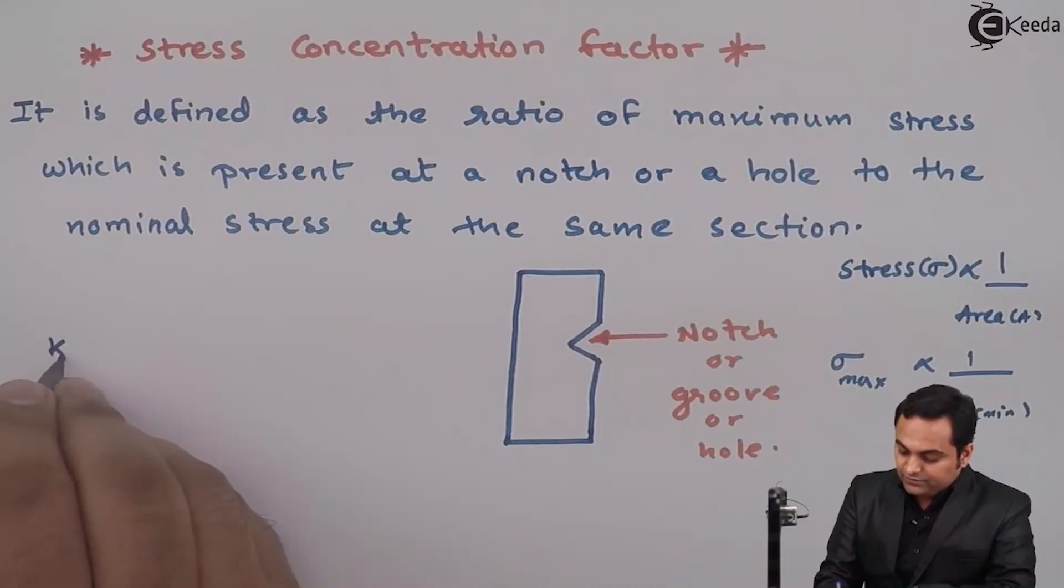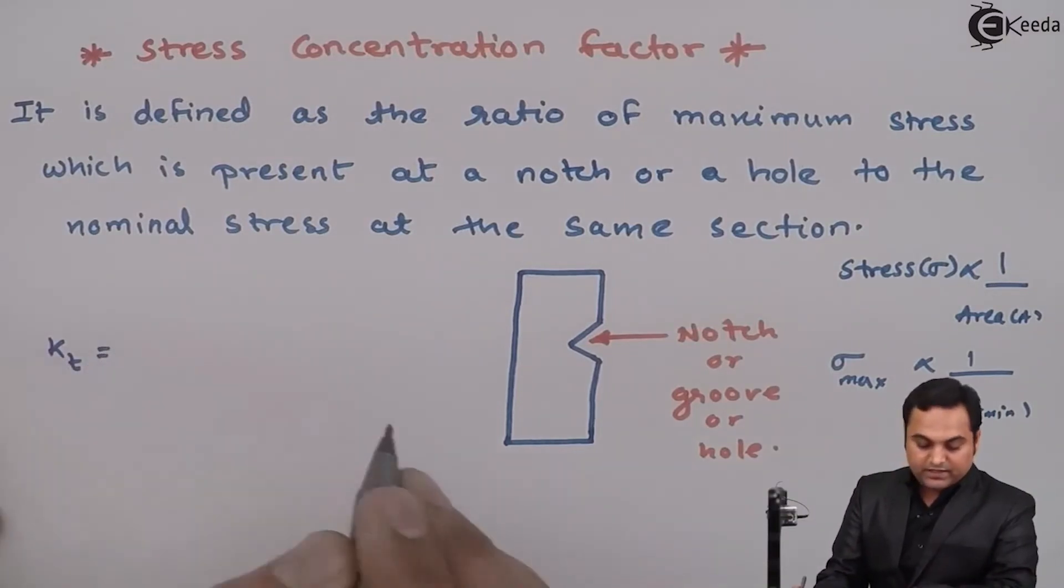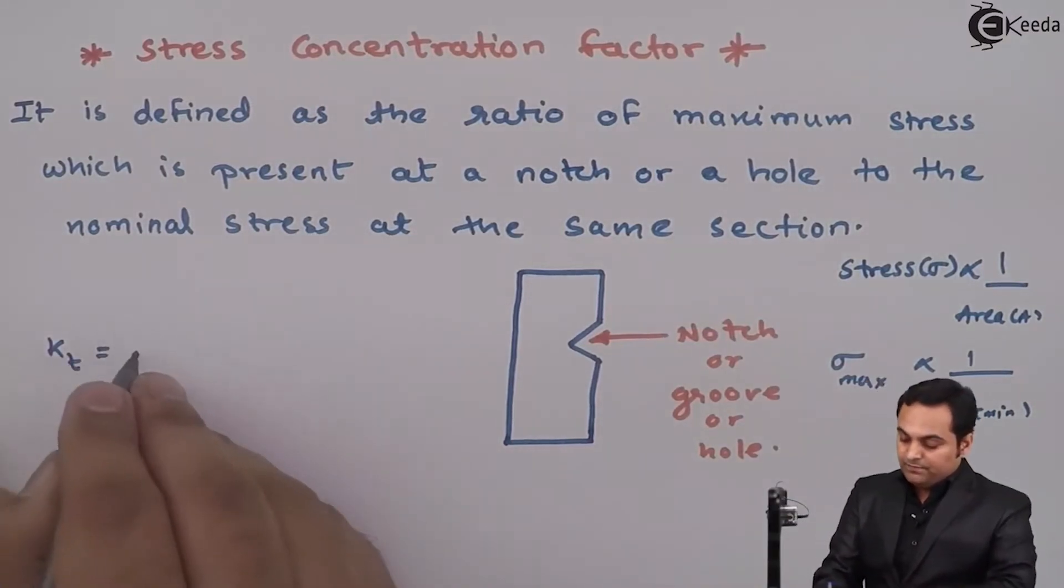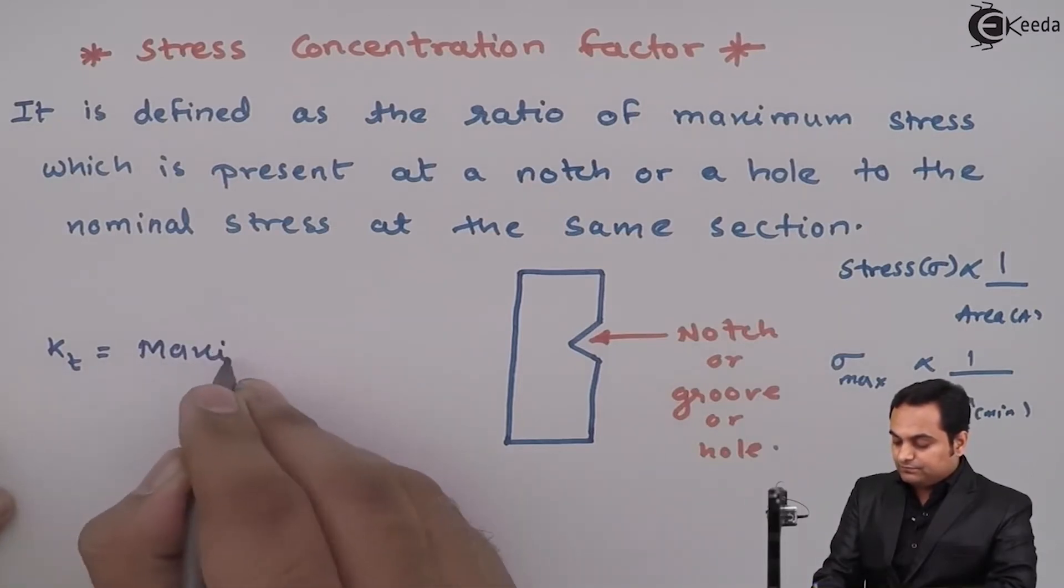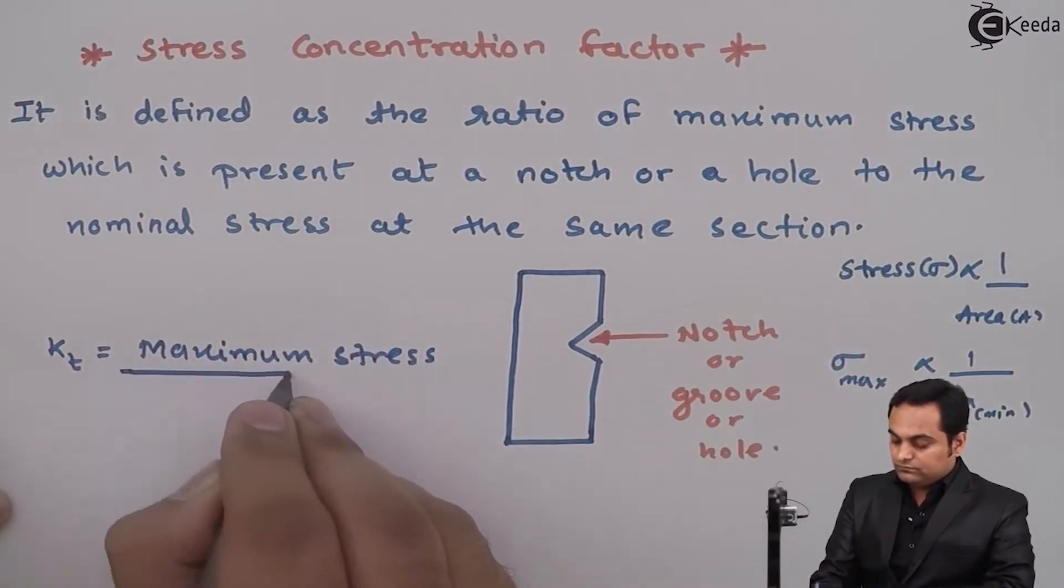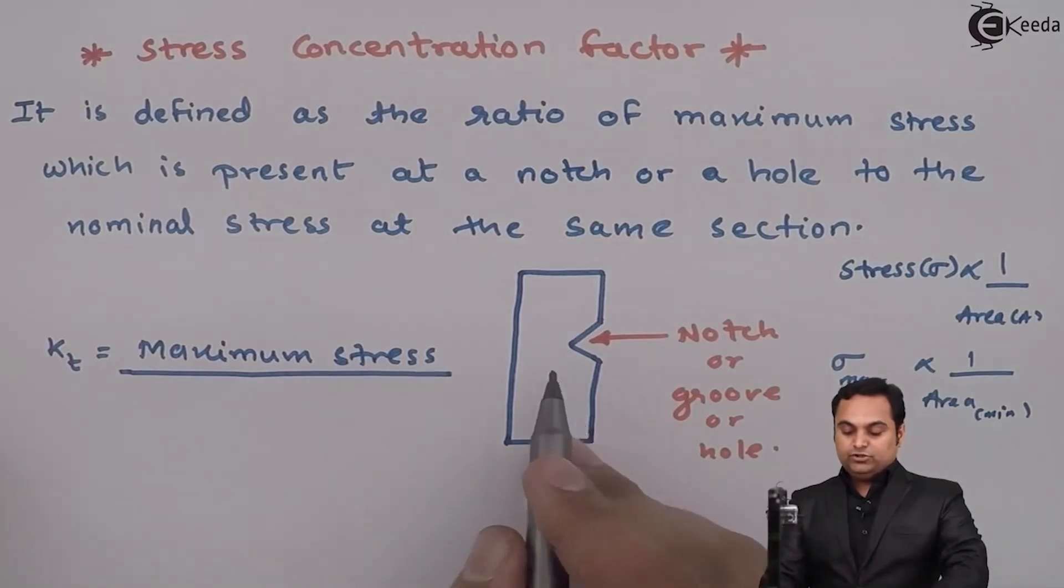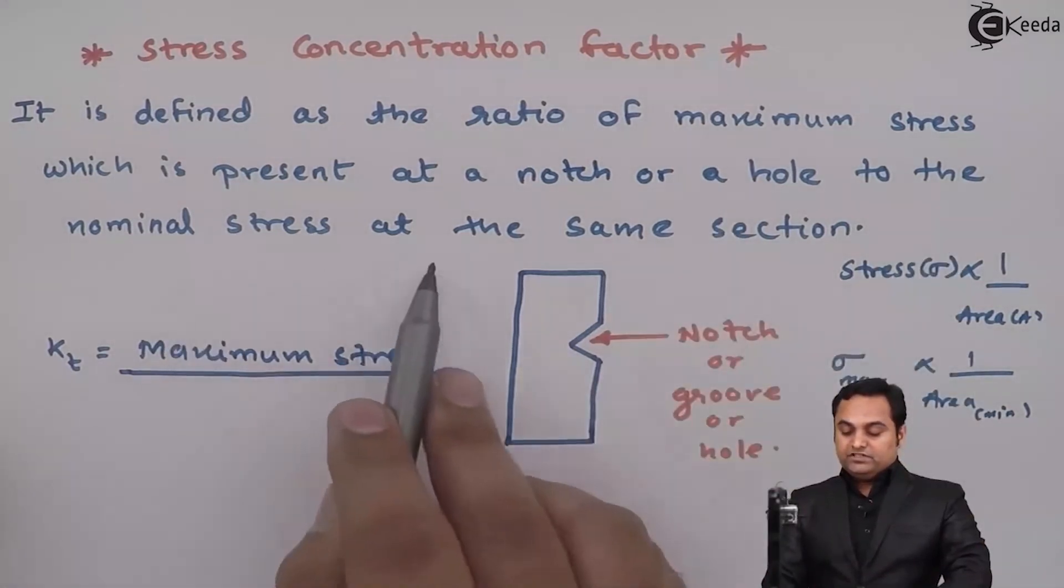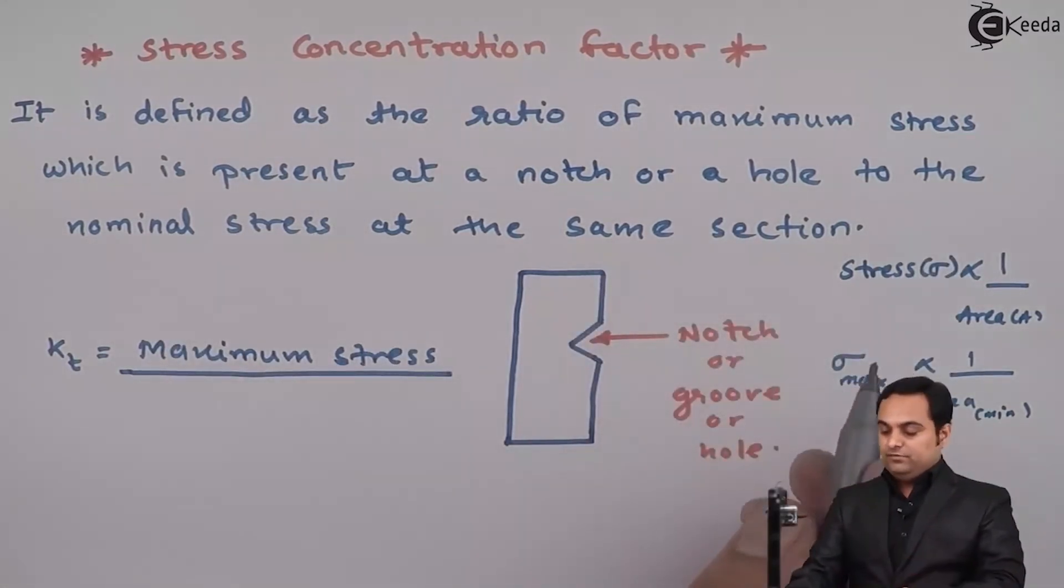Stress concentration factor is denoted by k suffix t, and it is equal to maximum stress which is there at the notch to the nominal stress at the same section.